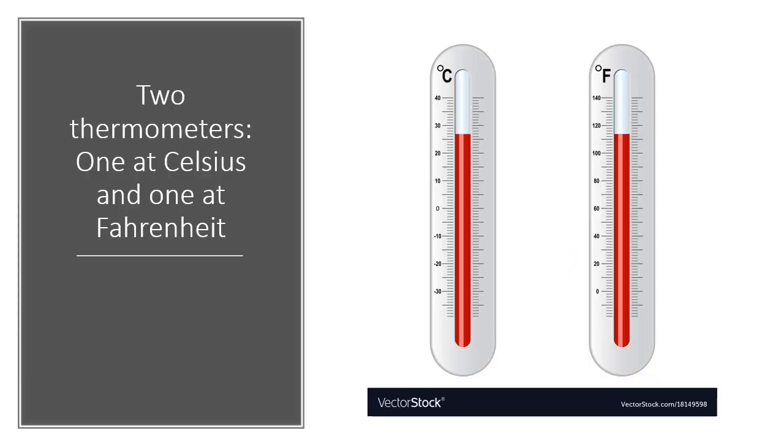These are two thermometers with one at Celsius and one at Fahrenheit, so you can see the difference between the two. While Fahrenheit is somewhere around 117, Celsius is somewhere around the 28 range-ish. You can see just how different they are and just how different you would be telling somebody that the weather is a certain temperature.